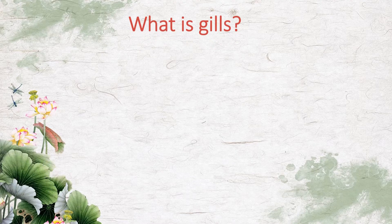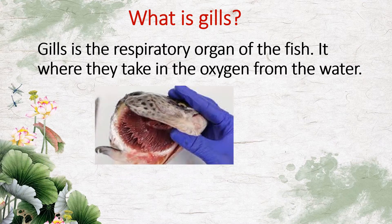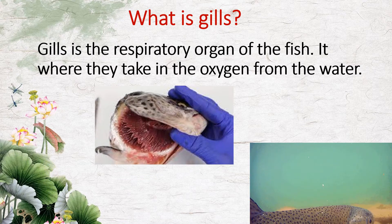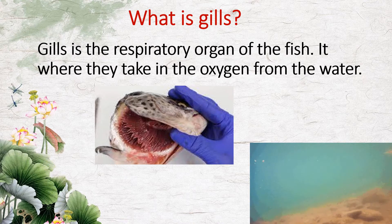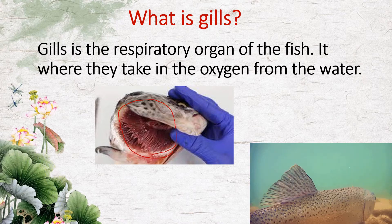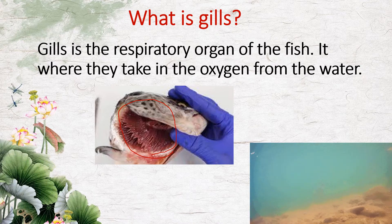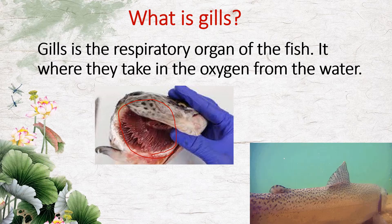Next, what is gills? Gills is the respiratory organ of the fish. It is where they take in the oxygen from the water, so gills is where fish breathe. This here is what we call the gills. Without the gills, the fish cannot breathe in the water or under the ocean.